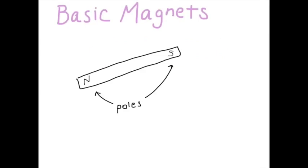So here we have your basic magnet. For the purposes of this chapter, we'll be treating all magnets as solid bars with two ends. These ends are called the poles. As you can see, this magnet has a north pole and a south pole.